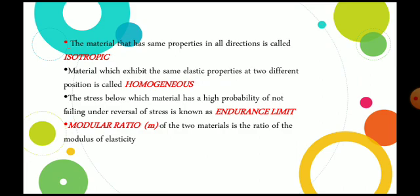Next, modular ratio: it is the ratio of the modulus of elasticity of the first material (E1) to the modulus of elasticity of the second material (E2). Modular ratio is inversely proportional to Poisson's ratio, where μ = 1/m.